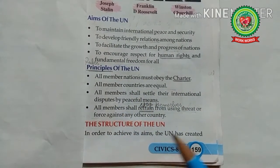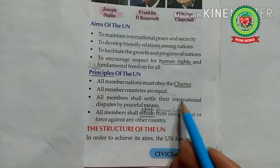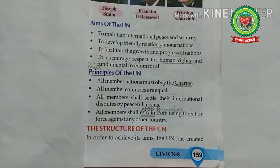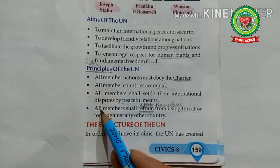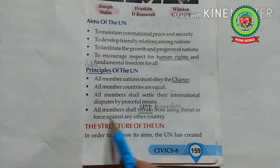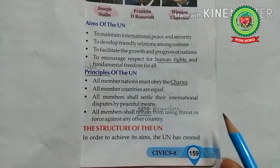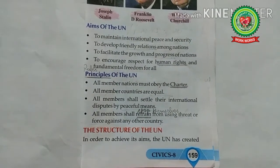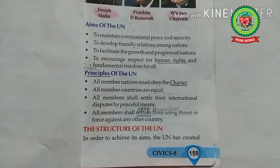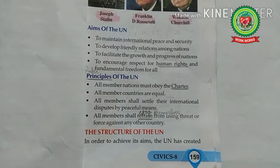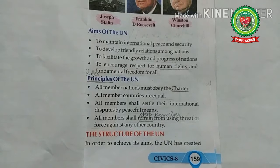All member nations are sovereign — meaning they are free in their internal and external matters. Third principle: all members shall settle their international disputes by peaceful means, without endangering international peace and security. Fourth principle: all members shall refrain from using threat or force against any other country — one nation does not have the right to threaten another. Fifth principle: the UN will not interfere in the domestic matters of member countries. The main aim of the UN is to save coming generations from wars and ensure peace, so the world can attain social progress, a better standard of life, justice, and security.